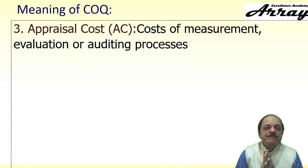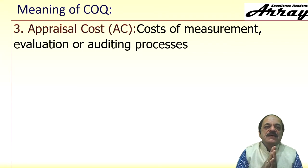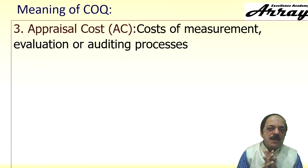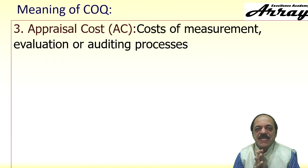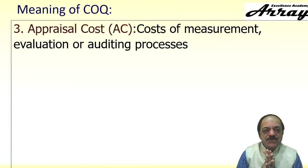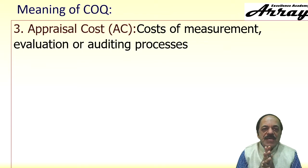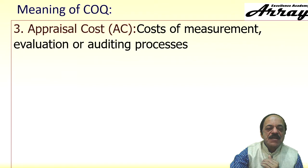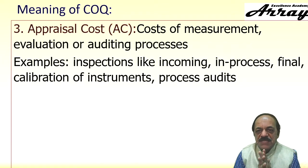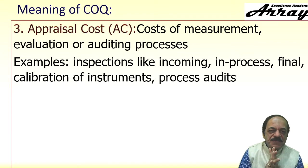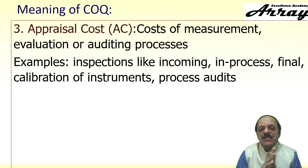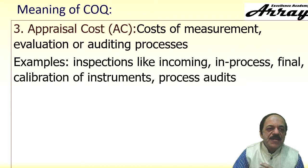The third component, appraisal cost, is the cost of measurement — part of your inspection or measurement done when you are not confident you can meet a parameter. This includes evaluation to see whether the product is good or bad based on its inherent characteristics, workmanship evaluation in a QA laboratory, and auditing processes. Examples include incoming inspection, in-process inspection, final inspection, calibration of instruments, and process audits — all appraisal costs.